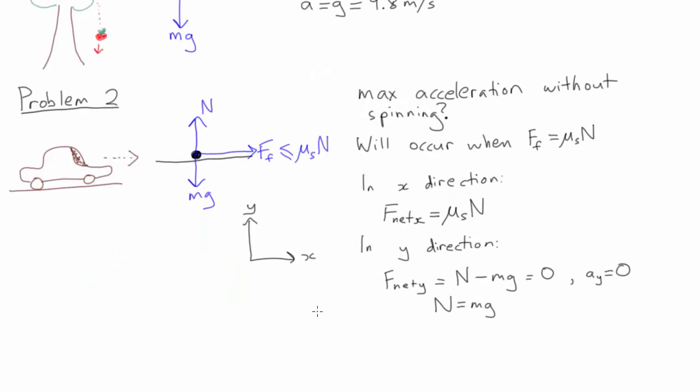This allows us to solve for n, which we can then substitute back into our force equation in the x direction. We then apply Newton's second law in the x direction, F net equals ma, and find that the maximum possible acceleration of the car without spinning the tires is equal to mu s times g.